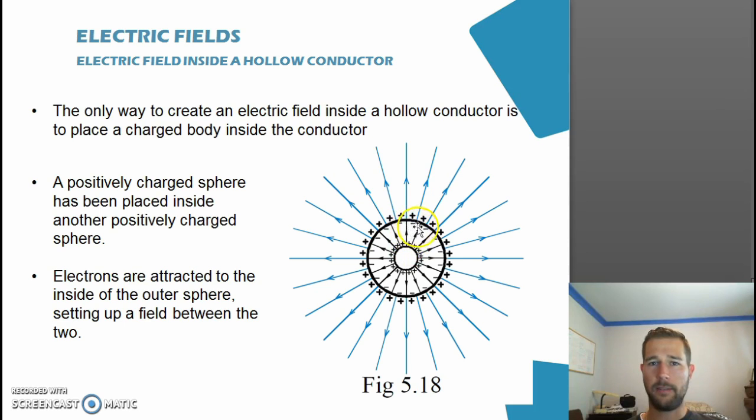which attracts the negative electrons on the inside of this conductor, leaving the outside with a positive charge. Now, with the outside being positively charged, we have electric field lines radiating in a radial direction away from here.